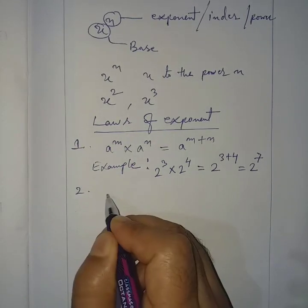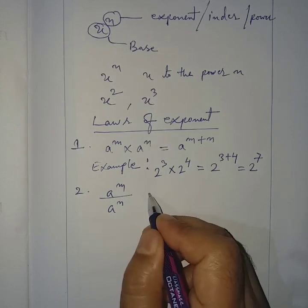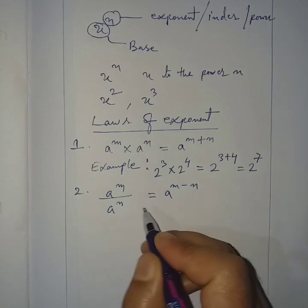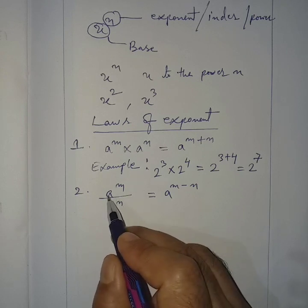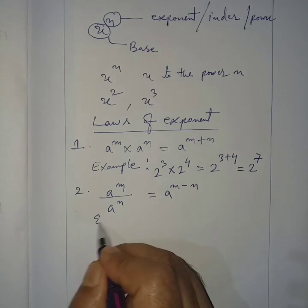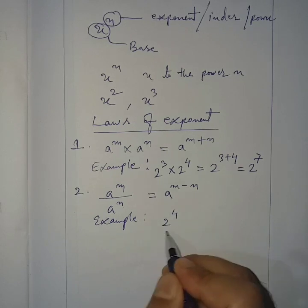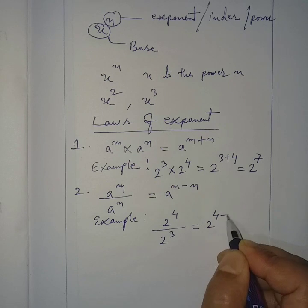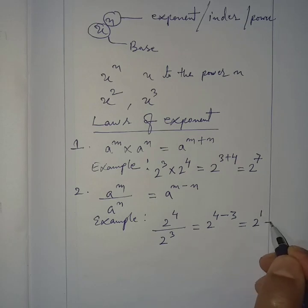Law number 2: a^m divided by a^n equals a^(m−n). That is, the power of the numerator minus the power of the denominator. Example: 2 to the power 4 divided by 2 to the power 3. The power of numerator is 4 and denominator is 3, so 4 − 3 = 1, giving 2 to the power 1, which equals 2.